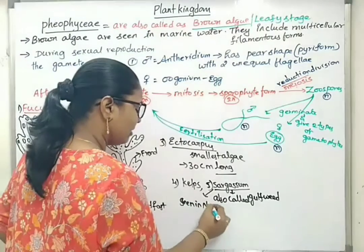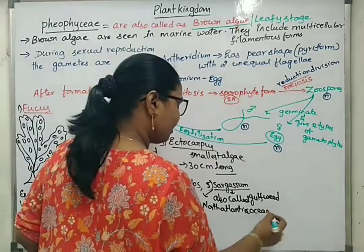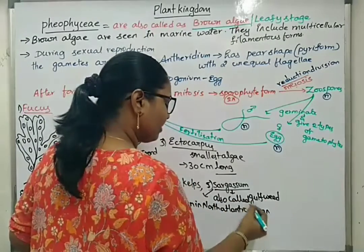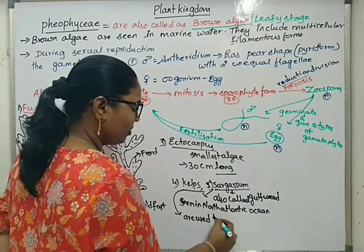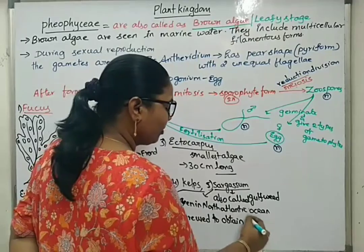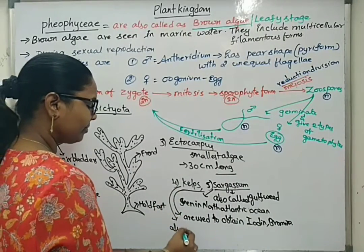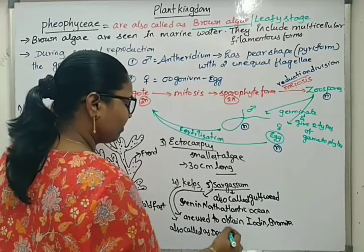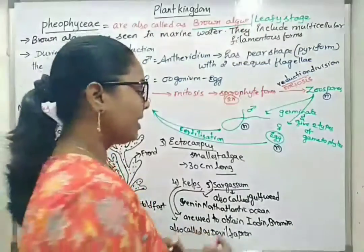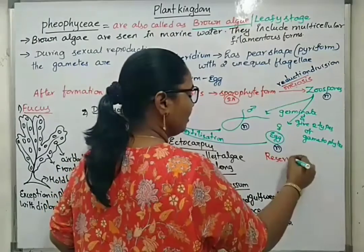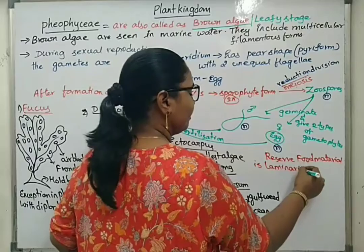Sargassum is seen in the North Atlantic Ocean, and that region is also called the Sargasso Sea. It is also called gulf weed. Kelps are used to obtain iodine and bromine. Kelp is also called Devil's Apron. The reserve food material in brown algae is laminarin and mannitol.